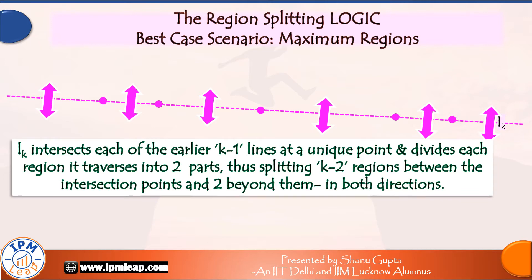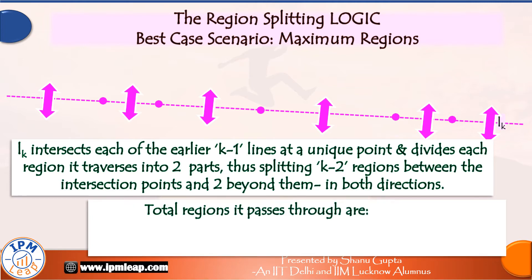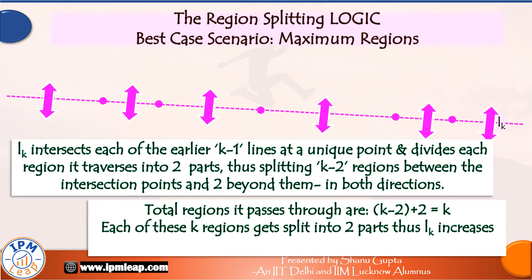So, if it is the sixth line, it will have five intersection points on it and it will pass through six regions shown by these pink arrows. Therefore, we can say that line number K passes through a total of K regions and in the passing, it splits each region into two parts. Thus, line number K forms K new regions on a plane.